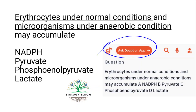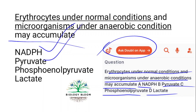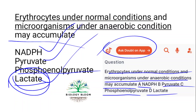Erythrocytes — taken as it is. Erythrocytes under normal conditions and microorganisms under anaerobic conditions may accumulate lactate. Lactate is the correct answer. Just as our muscles under anaerobic conditions accumulate lactate.